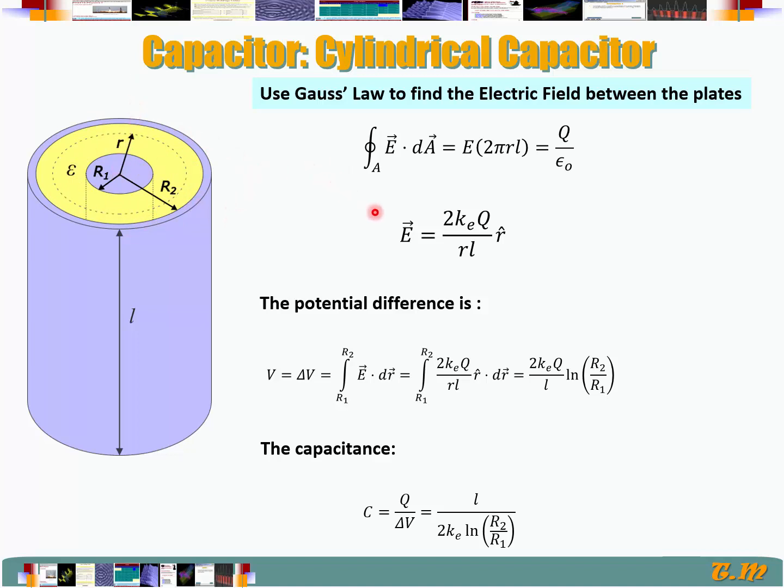The flux through that Gaussian surface is the charge inside over epsilon 0. Since the electrical field is constant throughout the area, that's going to be E times the area. The area of a cylinder is 2πr, the circumference, times the height. So 2πrL equals Q over epsilon 0.